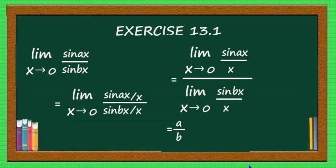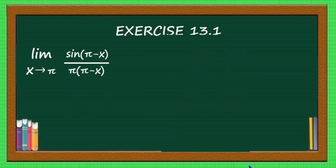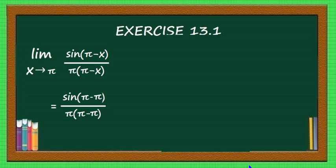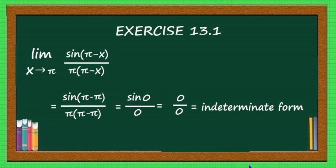Now let us continue with the next problem: limit x tending to π of sin(bx) divided by π(π - x). If you put x equal to π, the numerator is sin(bπ - bπ) which is sin 0, equal to 0. The denominator is also 0, giving 0/0, which is an indeterminate form.